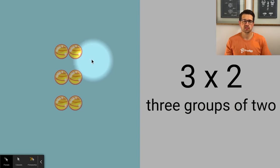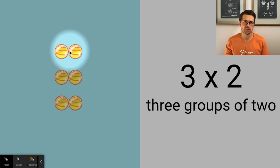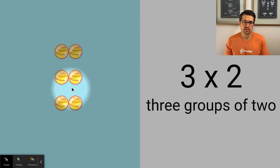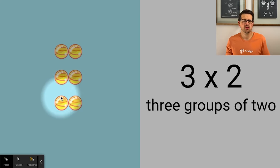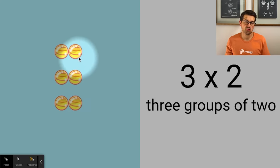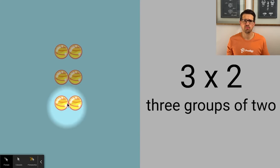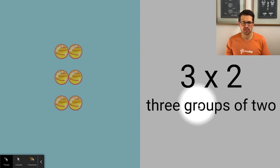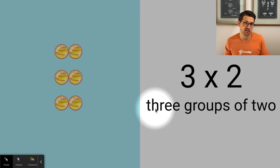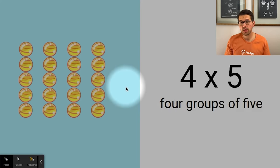When we multiply by two it's the same as doubling something. Two times three is the same as two groups of three — three plus three is six. Two times two is four, three times two is six, ten times two is twenty. We just double that number. Super easy!